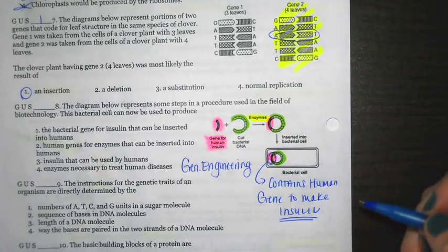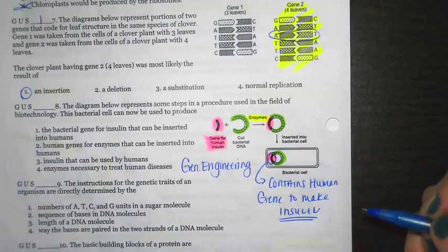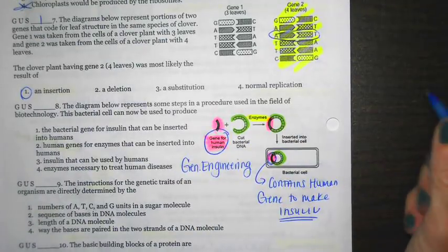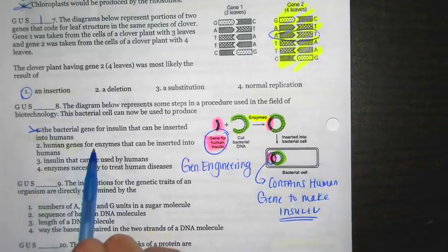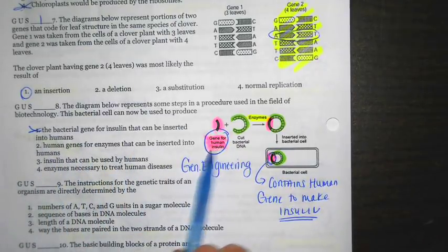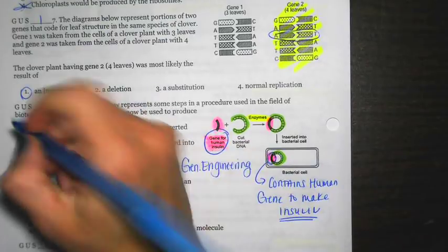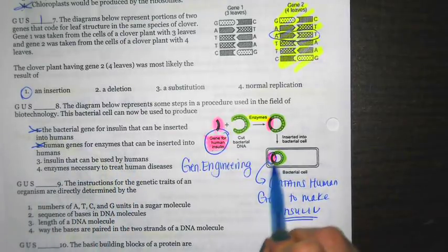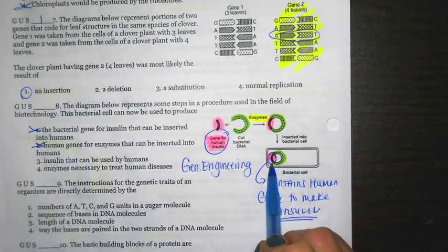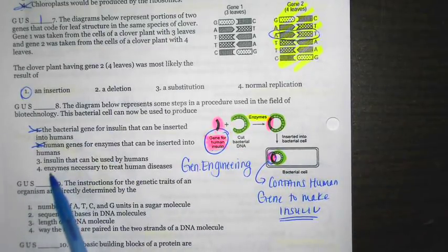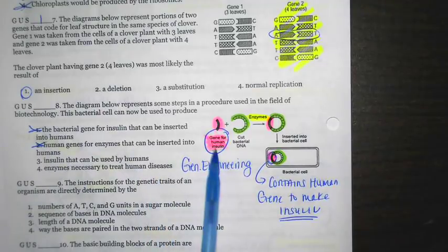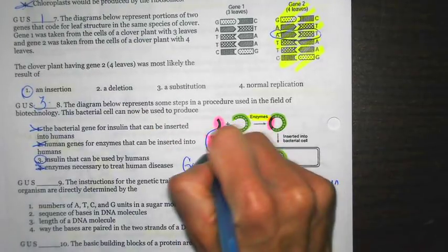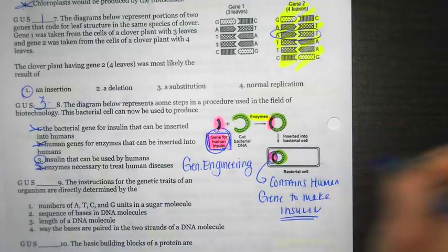So let's read through the answers. Number one says, the bacterial gene for insulin that can be inserted into humans. No, it doesn't have any, bacteria don't have the ability naturally to make insulin. So that's not true. Number two says, human genes for enzymes that can be inserted into humans. This insulin here is not an enzyme. It's an example of a hormone. That's not right. Insulin that can be used by humans. Well, we just said, this guy here is going to be capable of making insulin because he has the gene responsible. And then last one says, enzymes necessary to treat human diseases. No, again, it's a type of hormone. So that's not going to be right. Best answer choice there is three. Follow the picture. Use the captions in order to assist you.